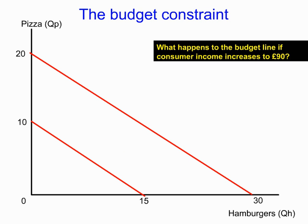What happens if we double our money income? With forty-five pounds we had our original budget line. If income doubles to ninety pounds, we can buy twice as much pizza and twice as much hamburger. Our budget line shifts outward in a parallel fashion to the original budget line because our income has changed while prices remain the same.